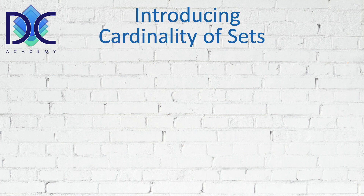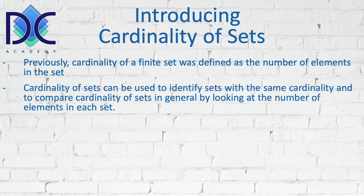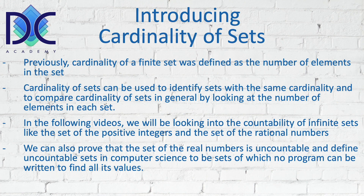We look at cardinality of sets. We looked at the cardinality of a finite set, which we defined as the number of elements in that specific set. Now cardinality of sets can be used to identify sets which have the same cardinality and compare cardinality of sets in general by looking at the number of elements in each set. In the following videos we will be looking into the countability of infinite sets like the set of positive integers and the set of rational numbers. We can also prove that the set of real numbers is uncountable, and define uncountable sets in computer science to be sets of which no program can be written to find all its values.